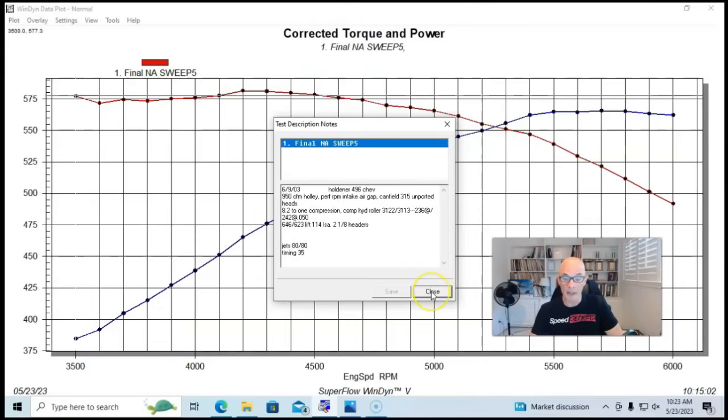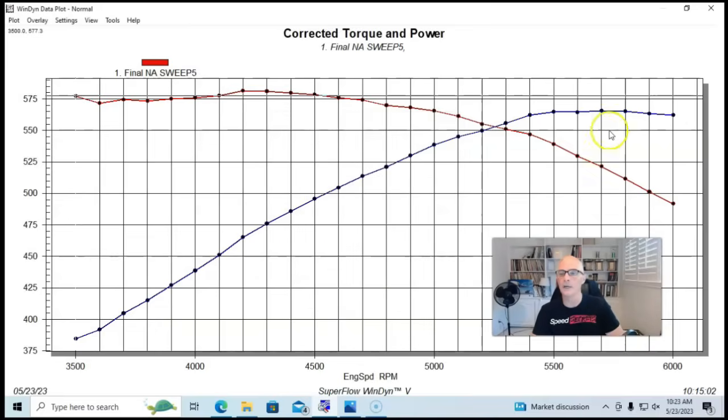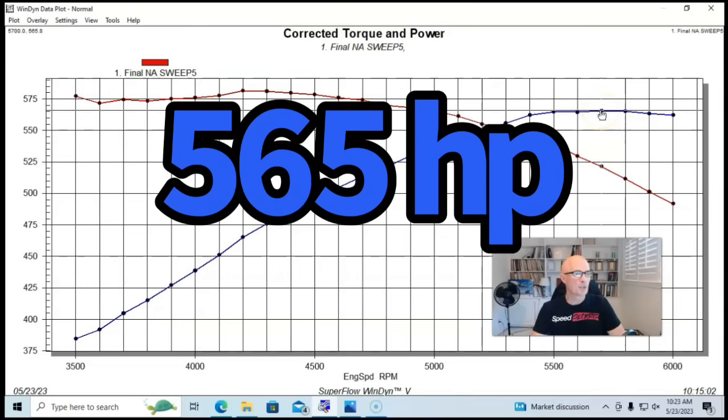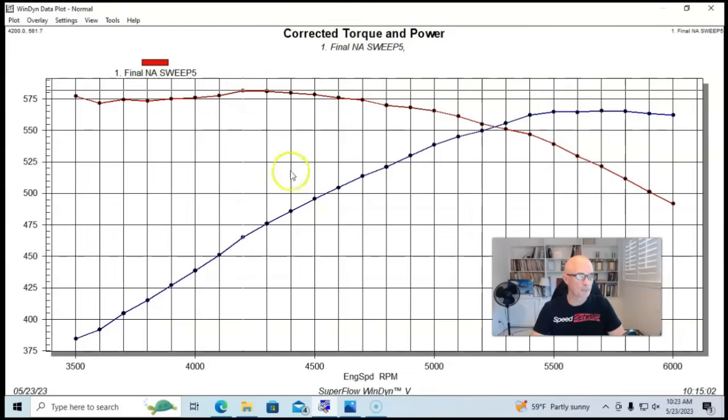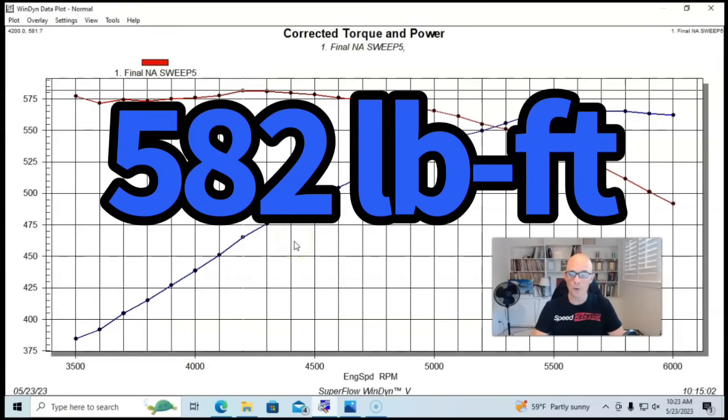And here's what happened on our NA combination. We were in our dual plane, Canfield 496. It produced 565, 566 horsepower, 582 foot pounds of torque.